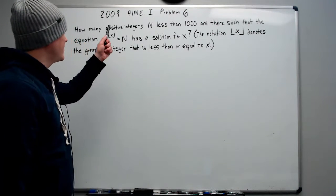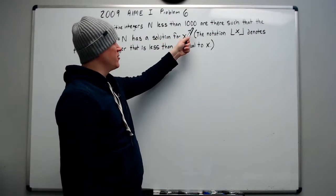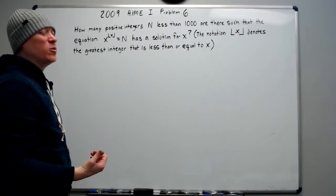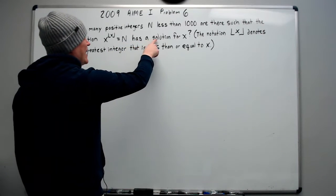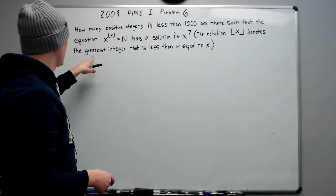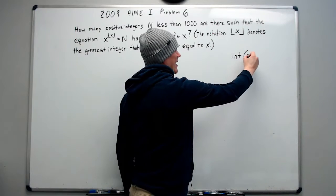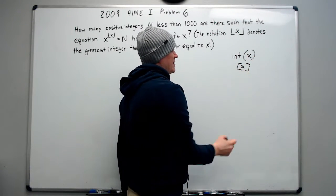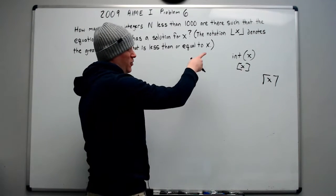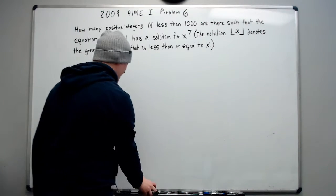Welcome back. This is the 2009 AIME 1, problem number 6. How many positive integers n less than 1000 are there such that the equation x to the power of the greatest integer less than or equal to x is equal to n has a solution for x. And then it tells you the notation that looks like this, denotes the greatest integer that is less than or equal to x. This is also called the floor function. You also might see it in school as int of x, or a bracket of x like this. Floor function, why is it called that? Well, there's another one called the ceiling function, and it does what you think. If the floor function rounds down, the ceiling function rounds up. And that's basically what you're doing.